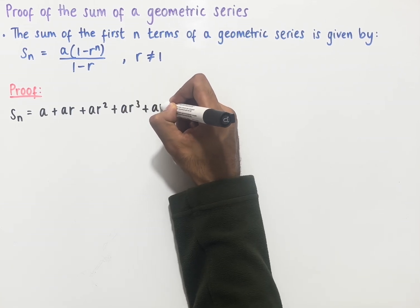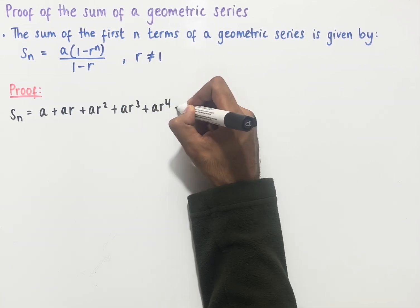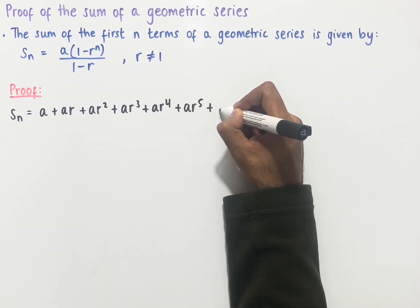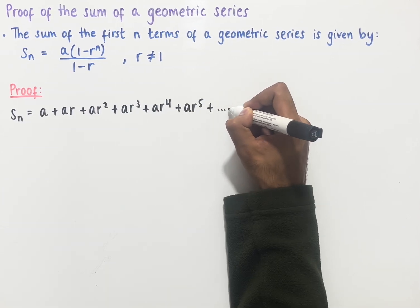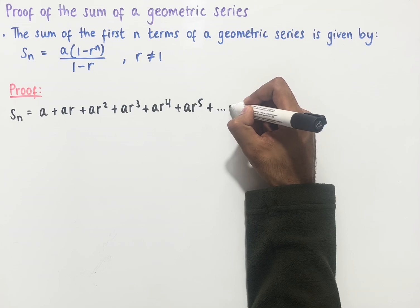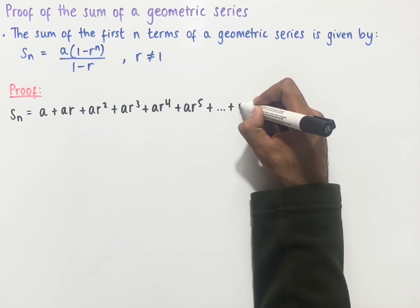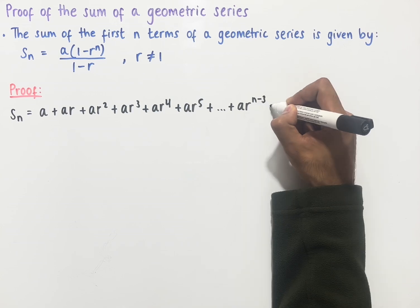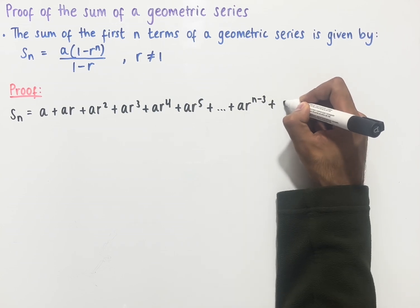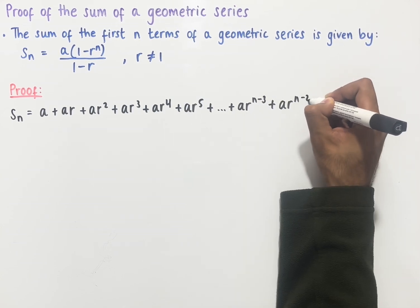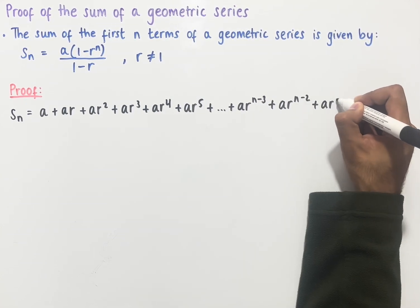Continuing, we have plus ar to the power of 4, plus ar to the power of 5, and now we'll write an ellipsis to indicate that there are terms in between, and then writing out some of the last few terms we have ar to the power of n minus 3, plus ar to the power of n minus 2.